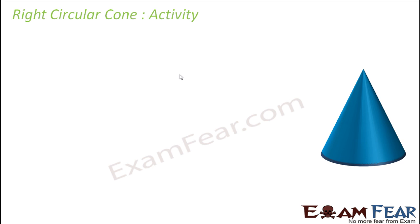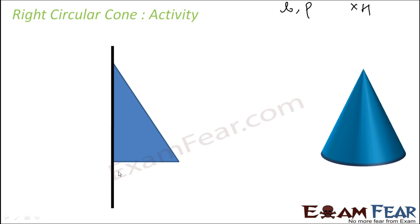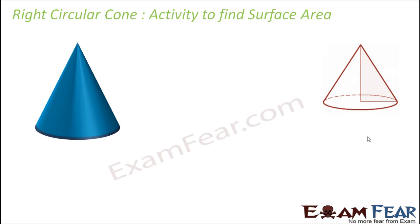To understand the cone in detail, let's do an activity. Take a right-angle triangle and a stick, and paste the stick to the perpendicular side — not the hypotenuse — in the fashion shown. Then rotate it. As you rotate from this side, you will get a cone-like structure, similar to an actual cone. Keep rotating and you will feel the cone-like structure. That is an activity to visualize a cone.